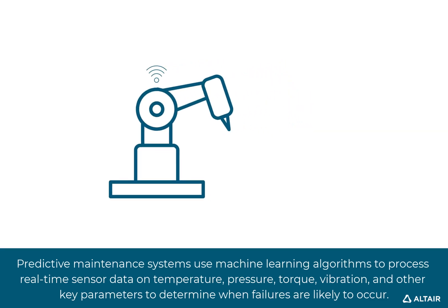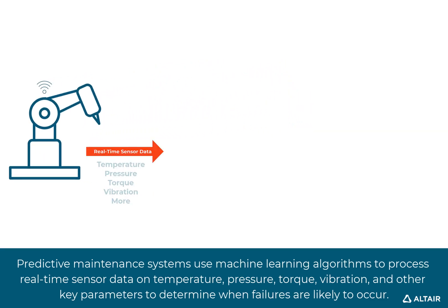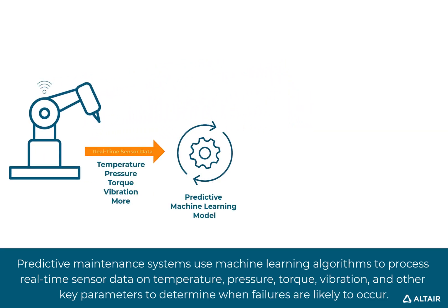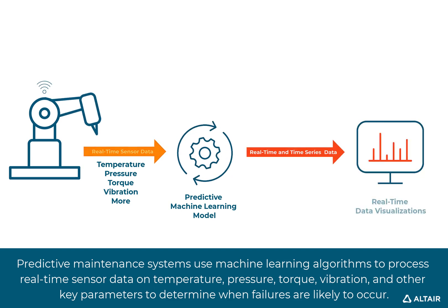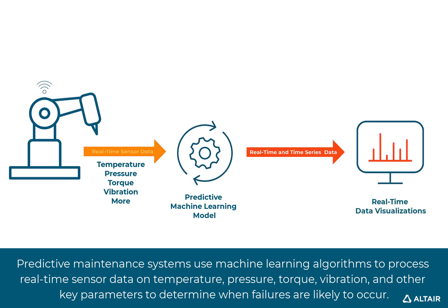Predictive maintenance systems use machine learning algorithms to process real-time sensor data on temperature, pressure, torque, vibration, and other key parameters to determine when failures are likely to occur.